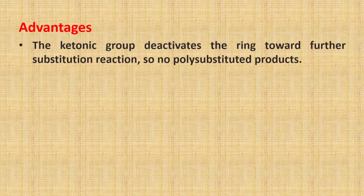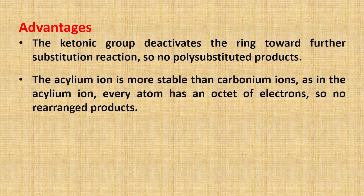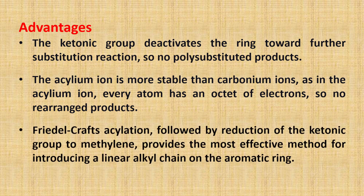Some advantages of Friedel-Crafts acylation are: the ketonic group deactivates the ring toward further substitution, so no polysubstituted product is observed, unlike in Friedel-Crafts alkylation. The acylium ion is more stable than the carbocation, as every atom in the acylium ion has an octet of electrons, so no rearranged product is observed. Friedel-Crafts acylation followed by reduction of the ketonic group to a methylene group provides the most effective method for introducing a linear alkyl chain on the aromatic ring. These are the three main advantages of Friedel-Crafts acylation over Friedel-Crafts alkylation.